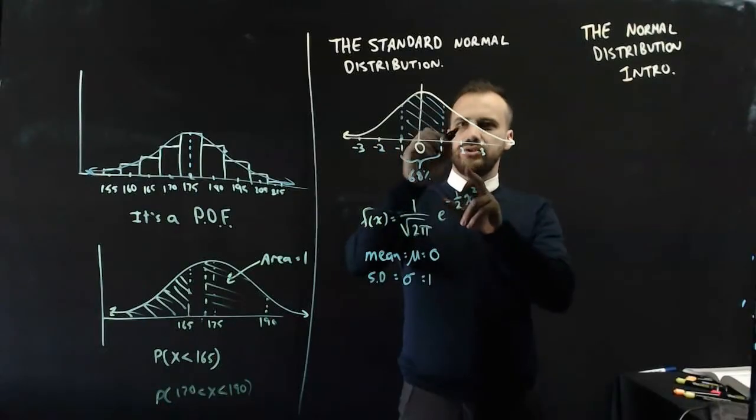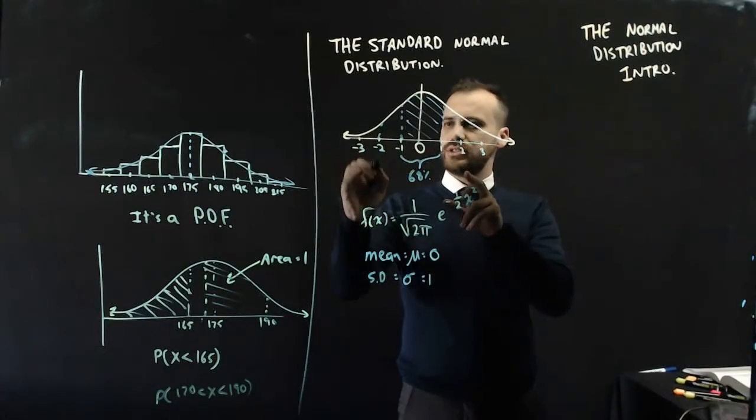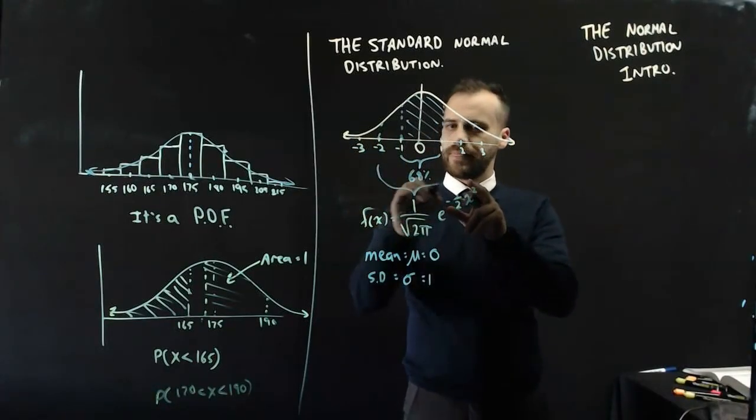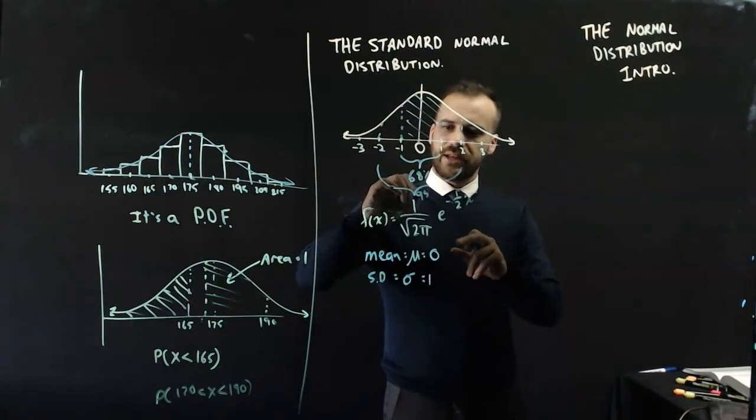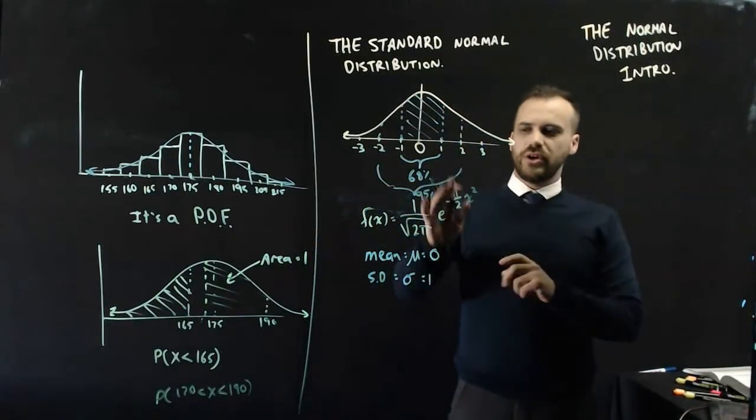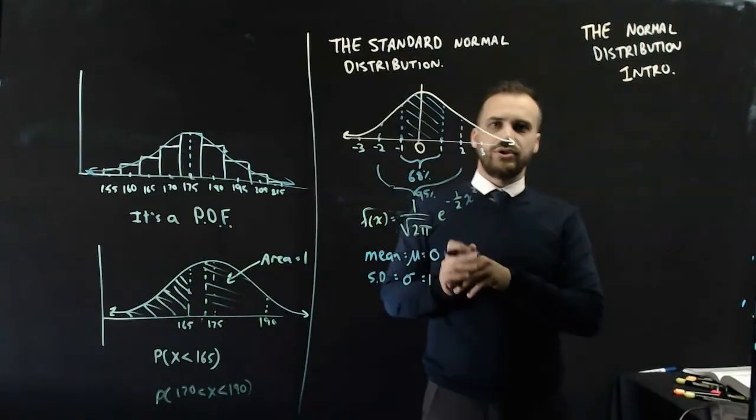Between negative 2 and 2, so two standard deviations, 95% of values fall between negative 2 and 2.